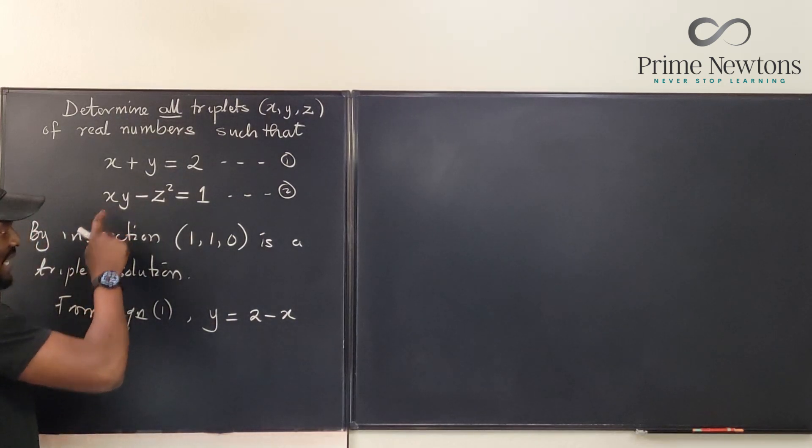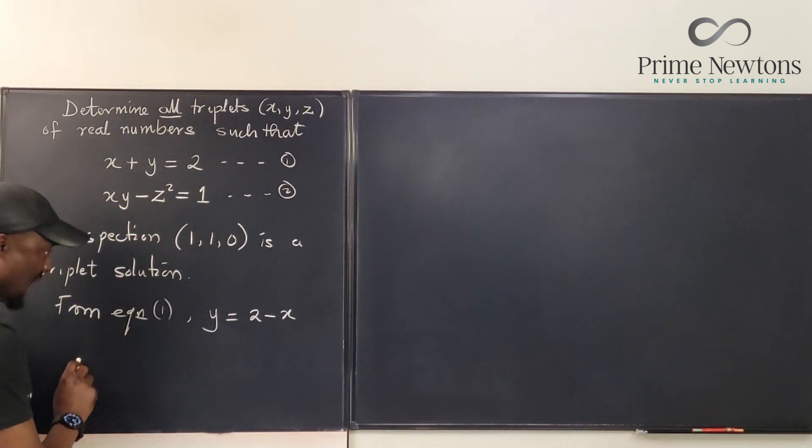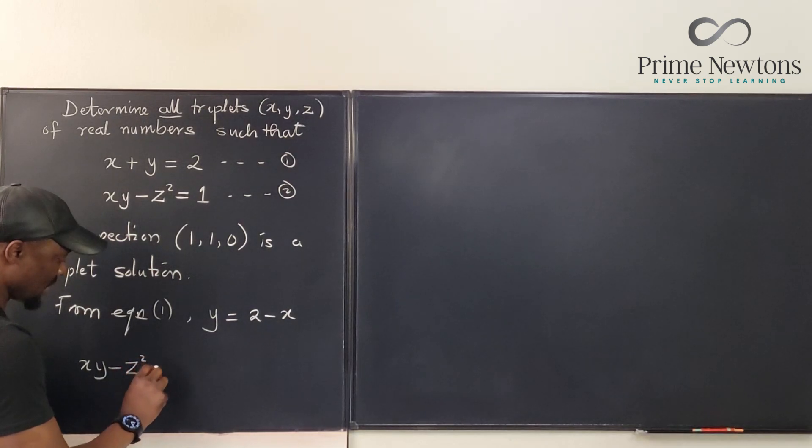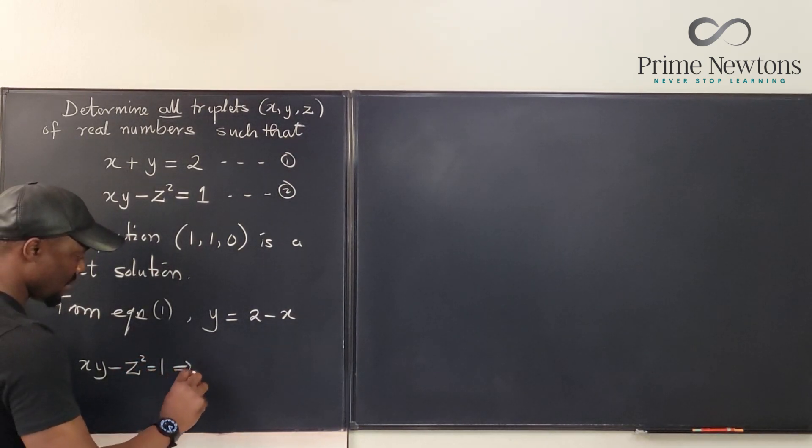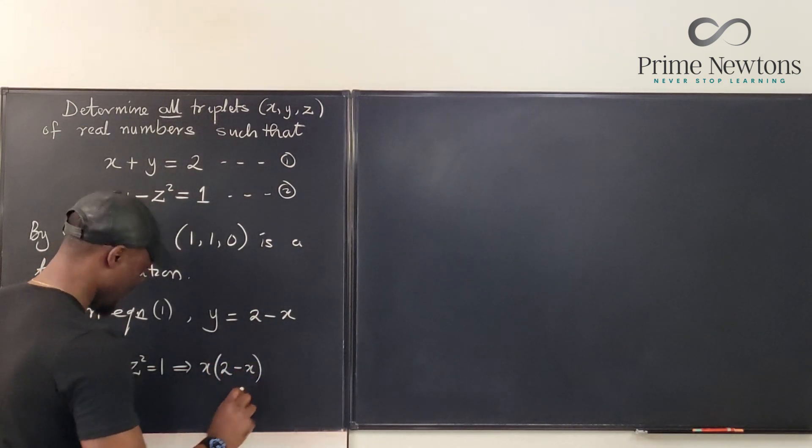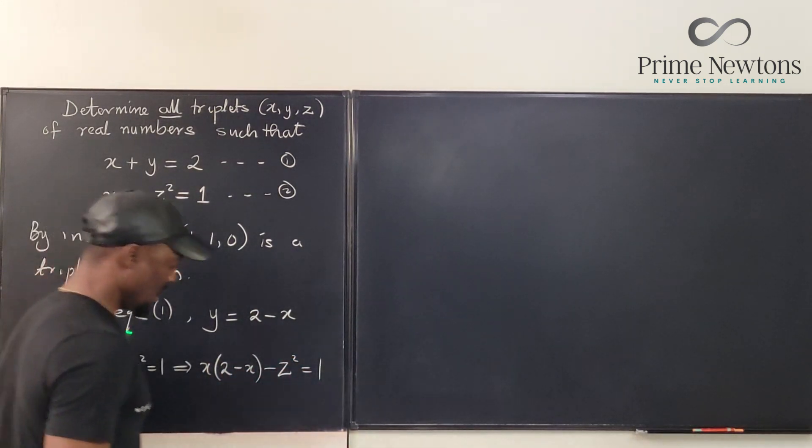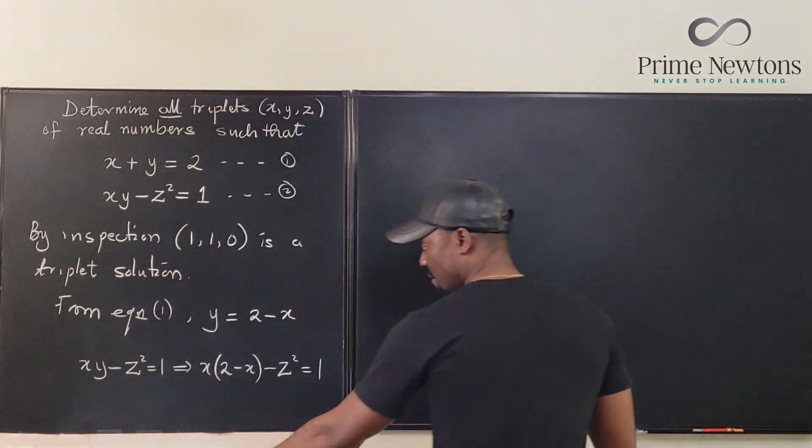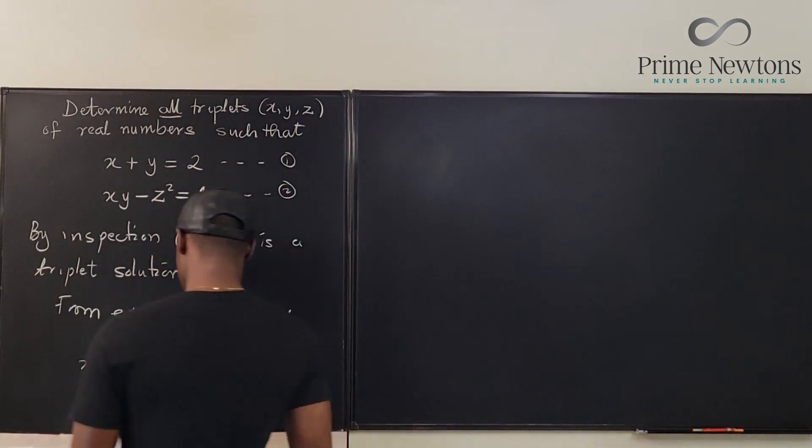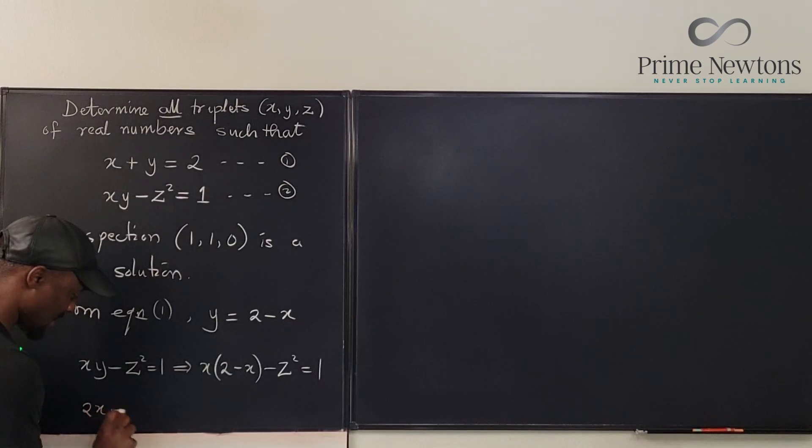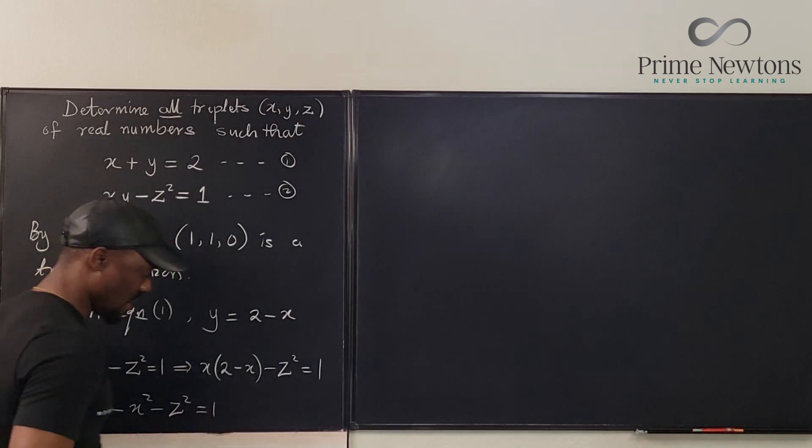I can substitute that in this second equation, so that xy minus z squared equals 1 implies x times, instead of y, I'm going to write 2 minus x, minus z squared equals 1. If I distribute this, I'm going to have 2x minus x squared minus z squared equals 1.